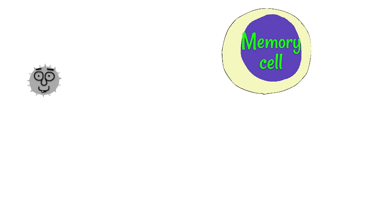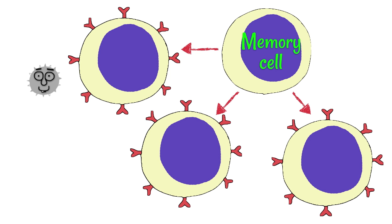So, let's imagine the pathogen does re-enter the body, maybe six months later or a few years later. The memory cell will immediately recognize it, immediately start producing the cells that need to produce the antibodies, the pathogen will be destroyed very quickly, and it will happen before the person is able to get sick.